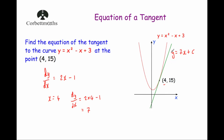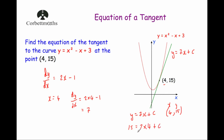Now we need to work out the plus c. Because it's a straight line, we're substituting the gradient 7 into y equals mx plus c. The c is where the green line meets the y-axis — it's the y-intercept. So let's substitute in the point (4, 15) into y equals 7x plus c. That gives us 15 equals 7 times 4 plus c. 7 times 4 is 28, so 15 equals 28 plus c, and subtracting 28 from both sides gives us c equals minus 13.